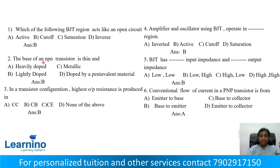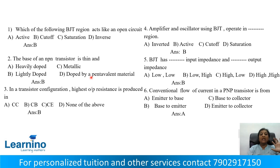Question number 2: The base of an NPN transistor is thin and lightly doped. Option A: Heavily doped, Option B: Lightly doped, Option C: Metallic, Option D: Doped by pentavalent impurity. The correct answer is lightly doped — the base is lightly doped.